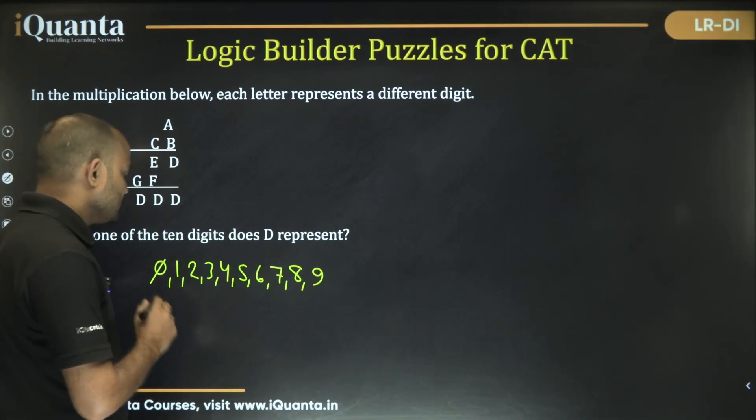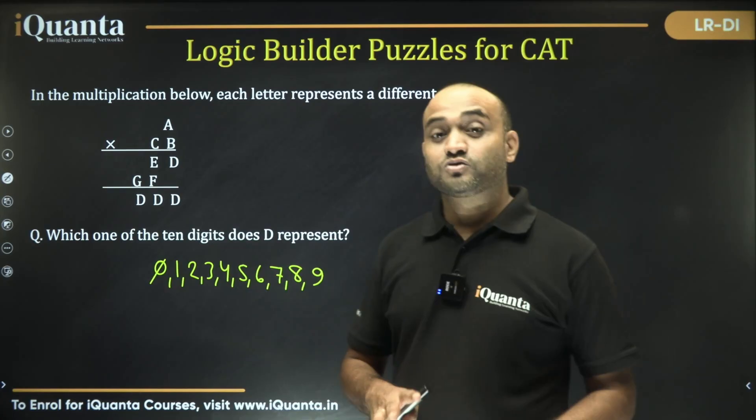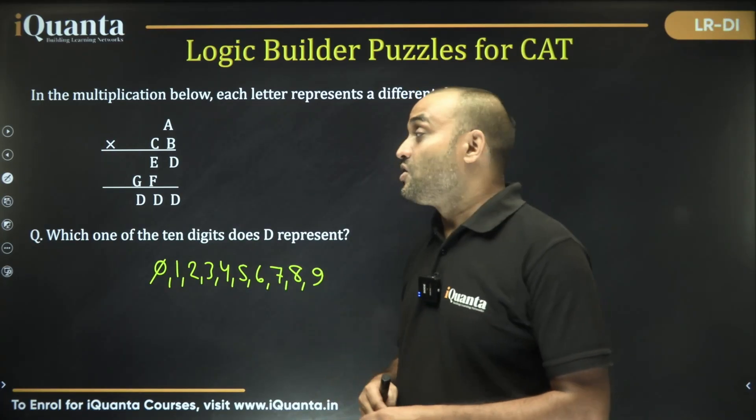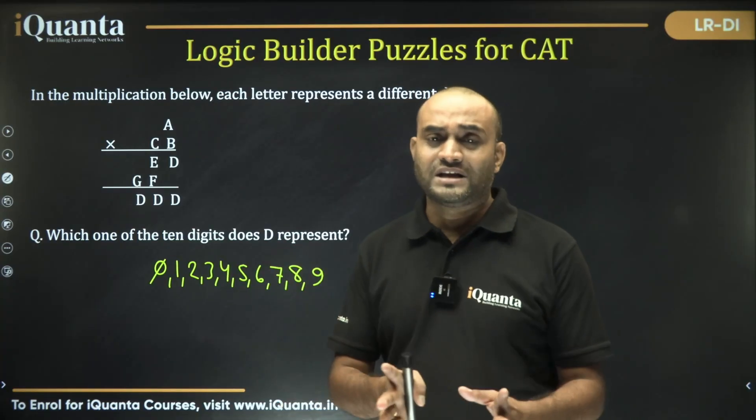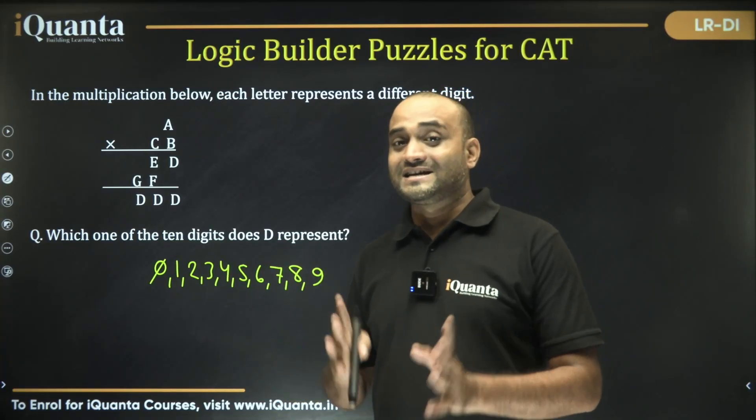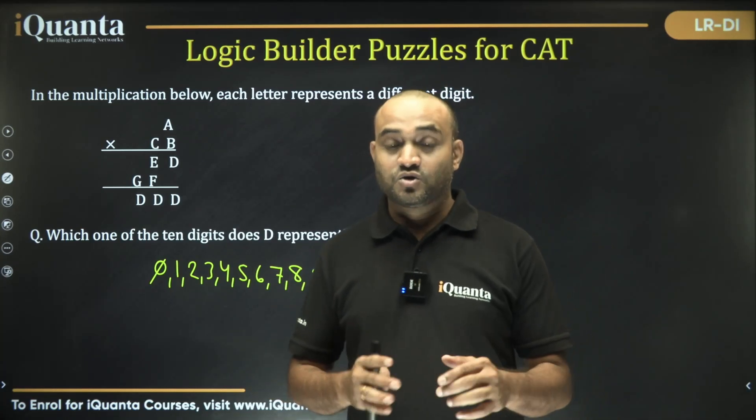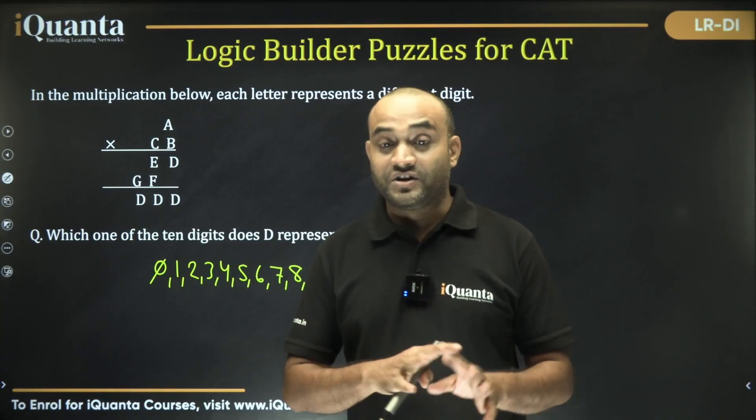So one thing is for certain that D cannot be 0. Now we are not just going to solve this question, but we are also going to learn the approach and whatever information we can extract from this question, because our purpose is not only to solve this question but to learn what kind of information we can extract as per the given data.